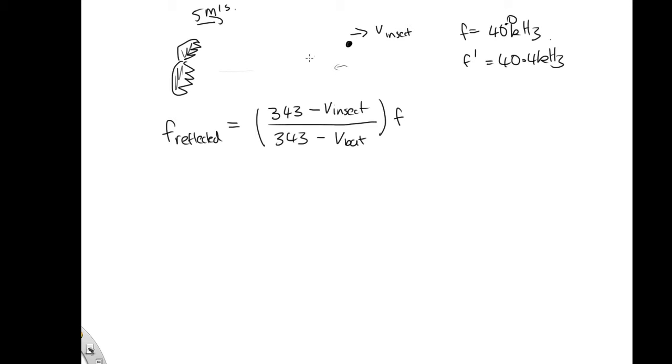So now we consider this reflected wave as our source and work out what's the bat actually going to hear. So in that case, f dash will be. OK, so we've got 343.